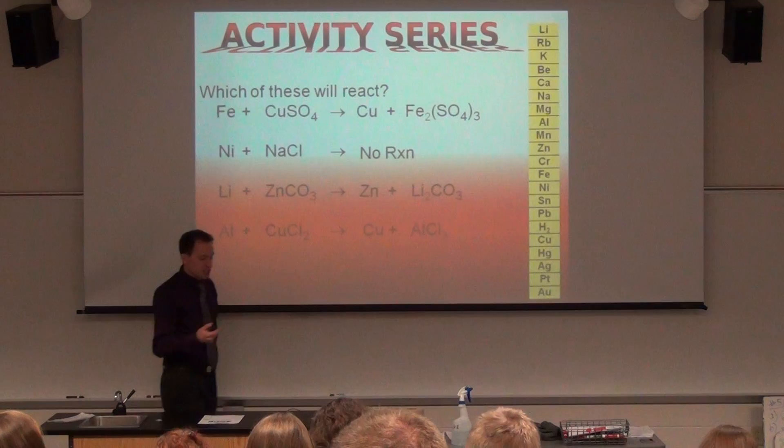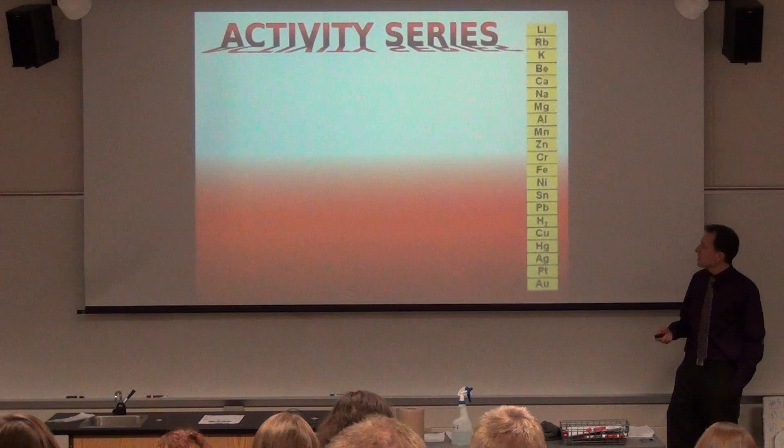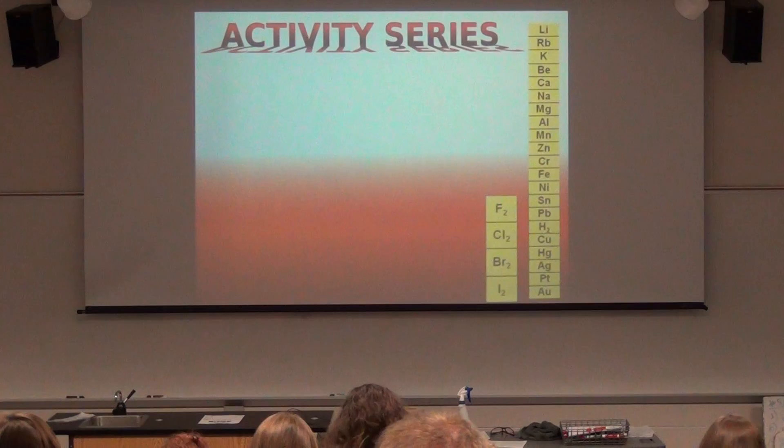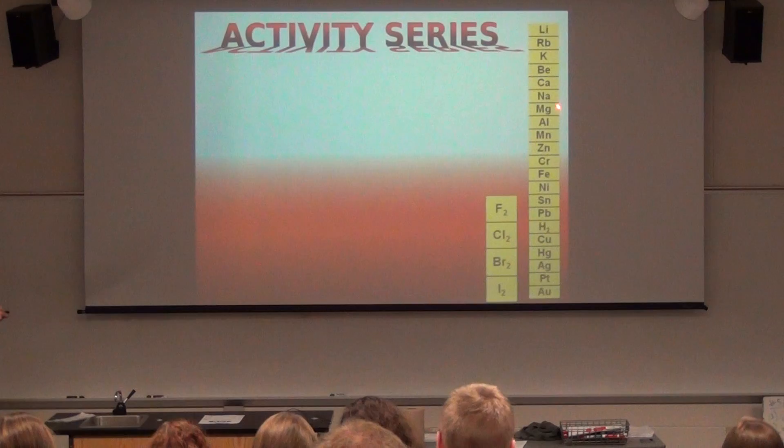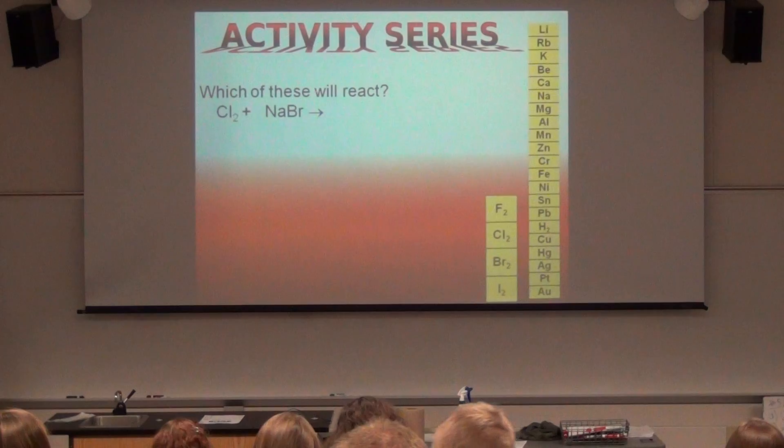There's more to it — on your sheet, there's another little list. I'd strongly suggest putting a horizontal line between them to understand these are two separate lists. Except for H, the first list is all metals; the second list is halogens.